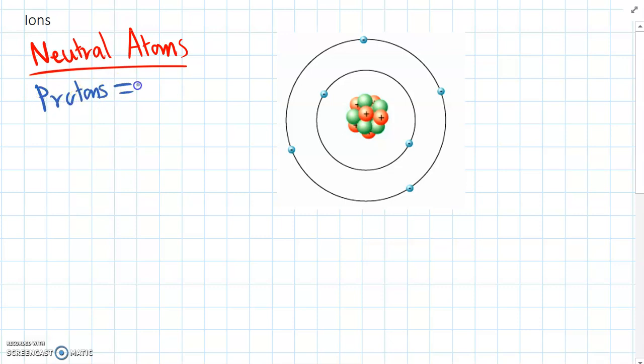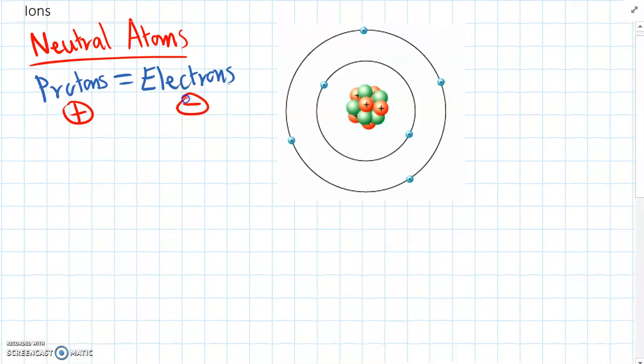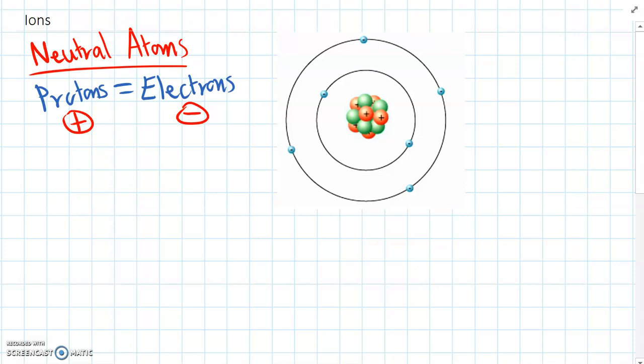So protons equals the electrons, because protons have a positive charge and electrons have a negative charge. So in a neutral atom, if we have the same numbers of each, we don't have an overall charge in that atom. No overall charge, but what scientists have discovered is that some atoms can actually gain or lose electrons.